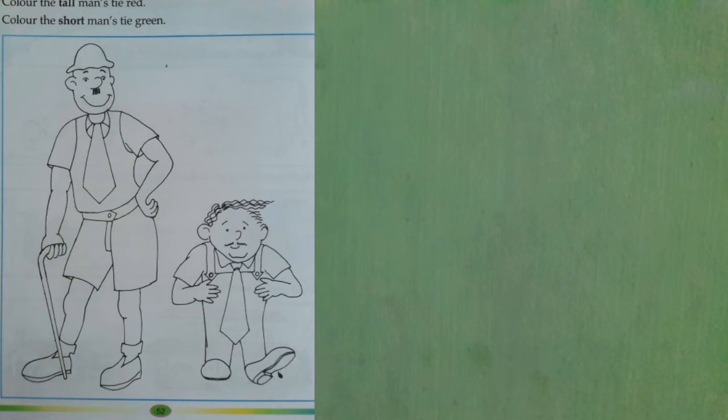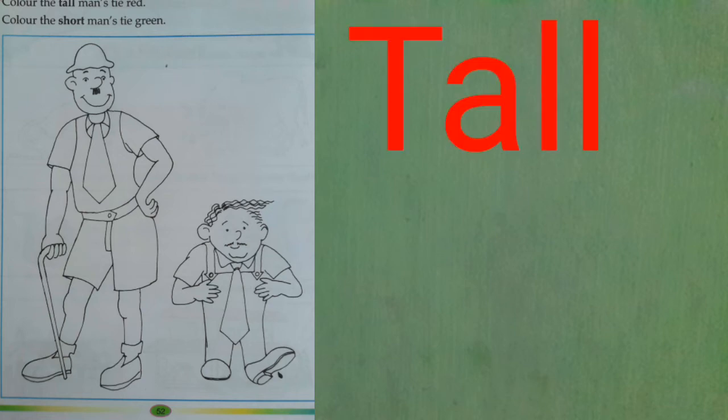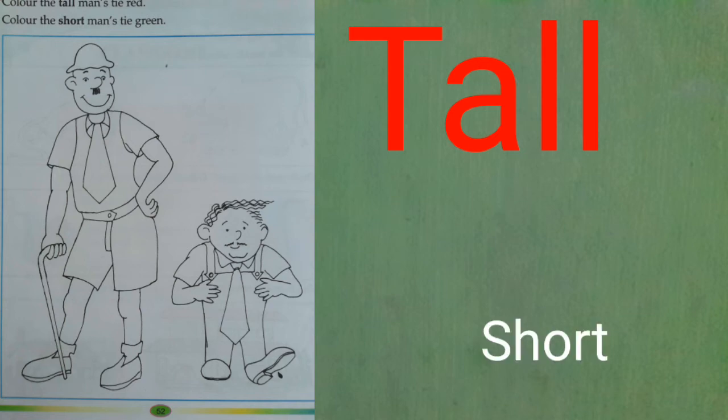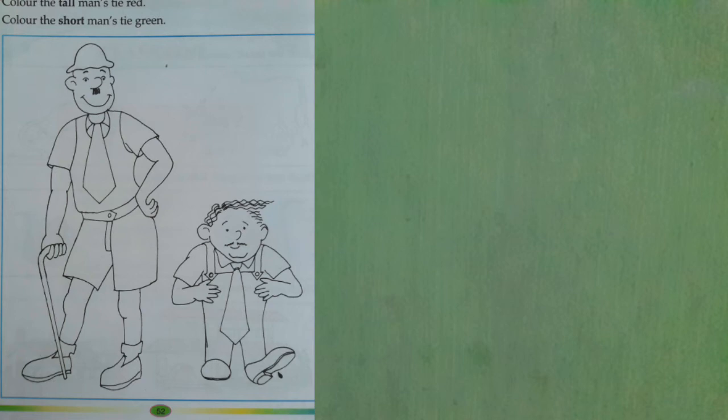Next, you see there is a picture of two persons. One is a tall person and another is very short. Here we will compare between length. More in length is tall; less in length is short. You see the picture — there is a tall person whose height is more, and another with less height. So one is tall and the other is short — that is the comparison by length.